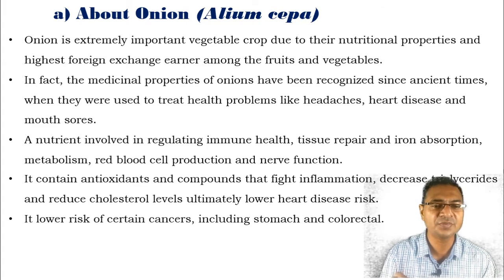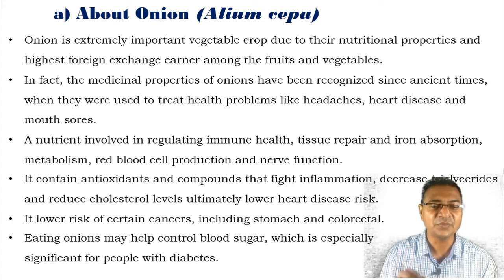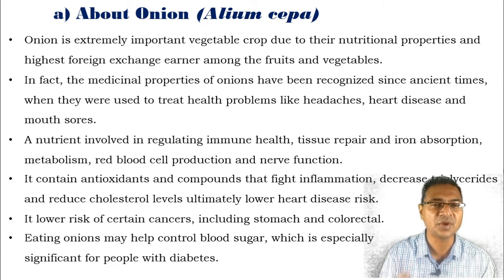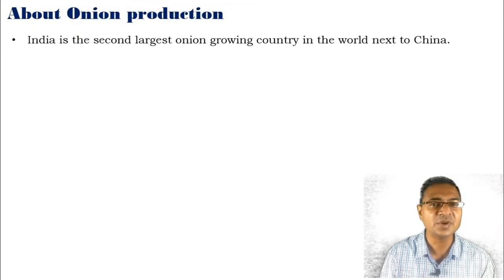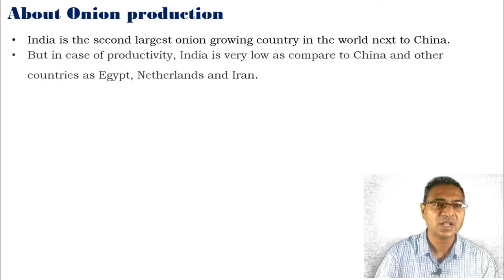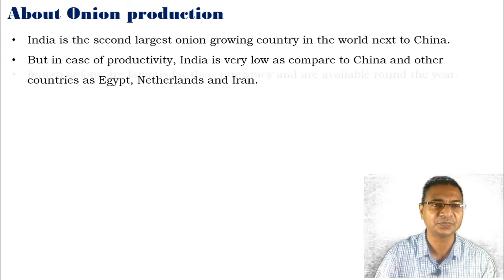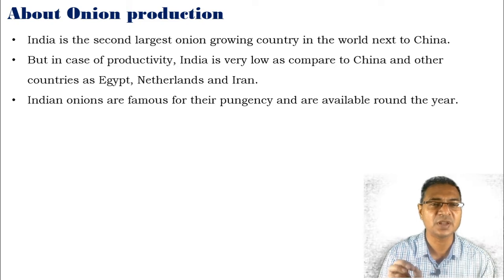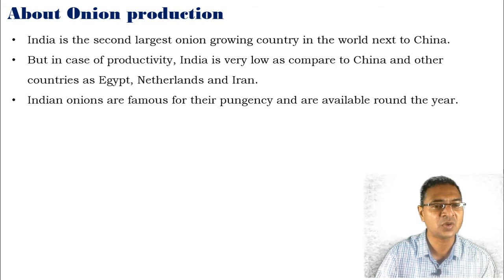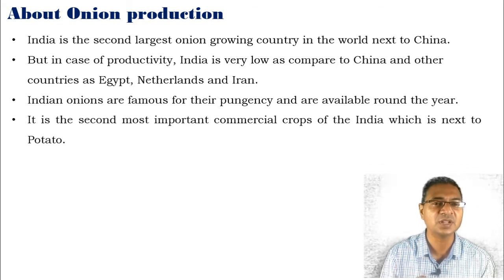It reduces the risk of certain cancers, especially stomach and colorectal. Eating onions daily may help control blood sugar, which is especially significant for people suffering from diabetes. About onion production: India is the second largest onion-growing country in the world, next to China. But in terms of productivity, India is very low compared to China and other countries such as Egypt, Netherlands, and Iran. Indian onions are famous for their pungency and are available throughout the year. It is the second most important commercial crop of India, next to potato.